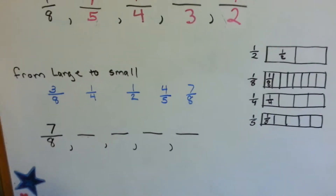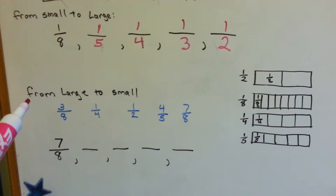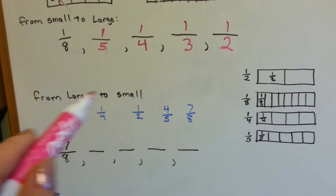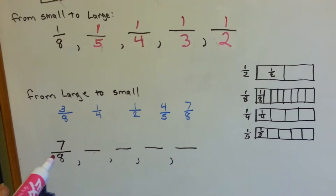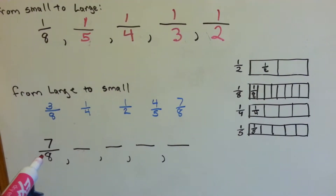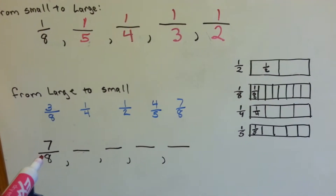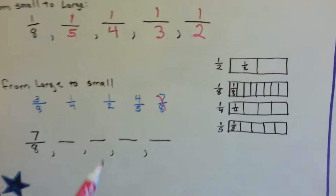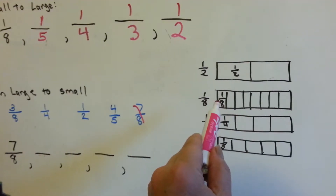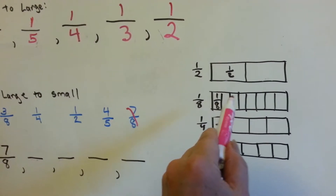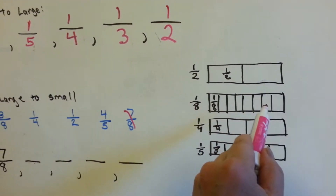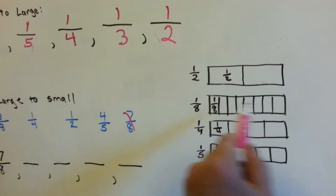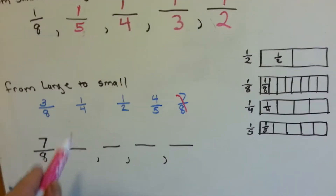Now we're going to go from large to small — the big one down to the littlest amount. Seven-eighths is the biggest fraction here. Seven-eighths means here are the eighths: one, two, three, four, five, six, seven — it goes all the way up to here. That's seven-eighths; it's almost the whole thing. So that's the biggest one.